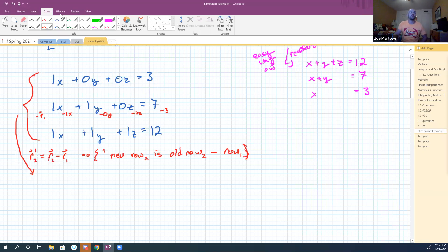So that's going to get me to a new system. The first and third things are going to remain unchanged, so I'm going to have one x plus zero y plus zero z equals three. My second row is going to change. I'm going to leave that blank for right now. And then here I'm going to get one x plus one y plus one z is 12. You guys all with me on that?